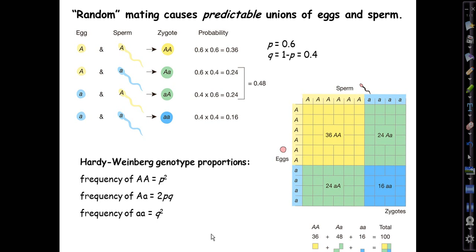And here are the familiar algebraic representations, p squared, 2pq, and q squared, for these genotype proportions.